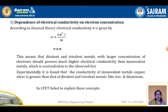The third failure is the dependence of electrical conductivity on electron concentration. According to CFET, sigma = ne²τ/m, so sigma ∝ n, meaning divalent and trivalent metals with larger electron concentrations should have much higher conductivity than monovalent metals. However, experimentally, monovalent metals like copper and silver have greater conductivity than divalent and trivalent metals like zinc and aluminum. This contradiction to observed fact is the third failure of CFET.